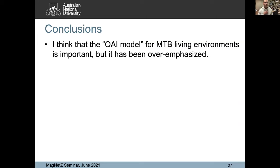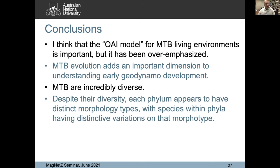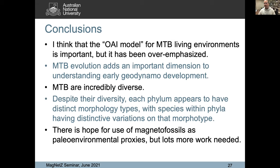I would argue that the OAI model for MTB is important but overemphasized, and I'd like us to be more sophisticated about that — though I'm probably whistling in the wind since it's such an embedded concept. MTB evolution really adds an important dimension to understanding the geodynamo, and that's pretty cool. They're incredibly diverse, but with that diversity, each phylum has distinct morphologies and each species within a phylum has variations on that morphotype. I think there's hope for developing paleoenvironmental proxies, but you have to do this kind of work for lots and lots of living species in order to infer back into the geological record. That's a quick snapshot of some of the things we and colleagues have been thinking about and really enjoying.